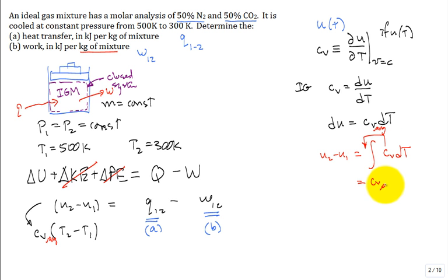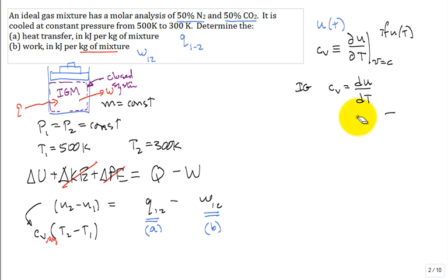And so, it's C sub V average over that temperature range, T2 minus T1. Okay? Make sense? All right. A little diversion there. Let's get us back on track. Okay.